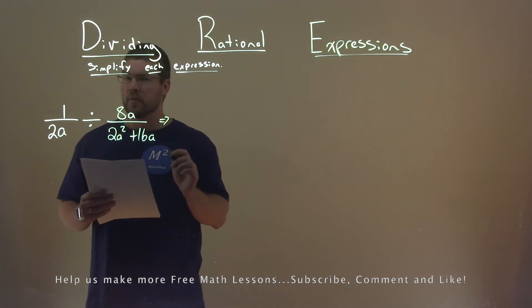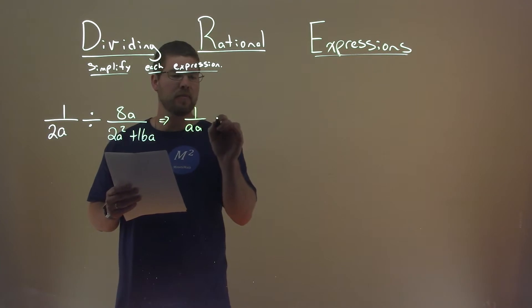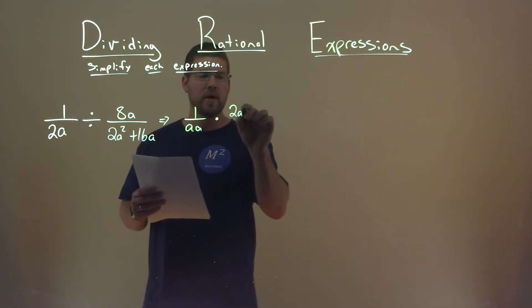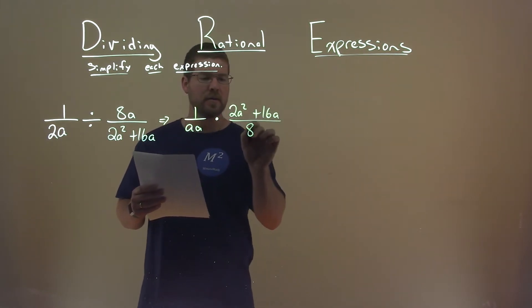I like to rewrite this as a multiplication problem. 1 over 2a stays the same, but instead of dividing, we're multiplying. And now we flip the second fraction. 2a squared plus 16a comes to the numerator. The denominator is just 8a.